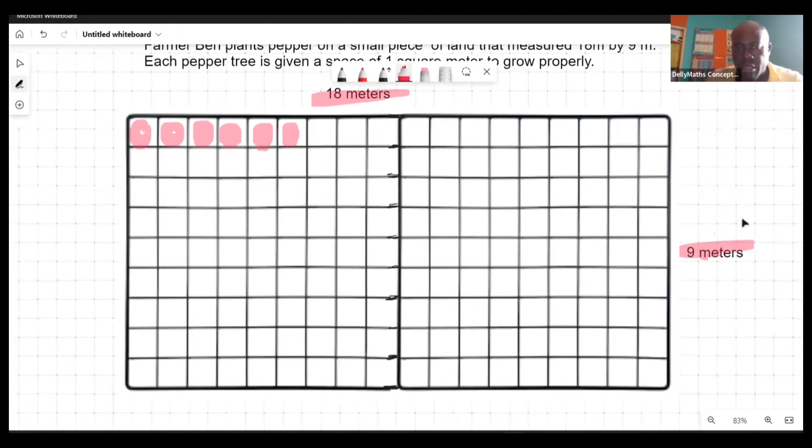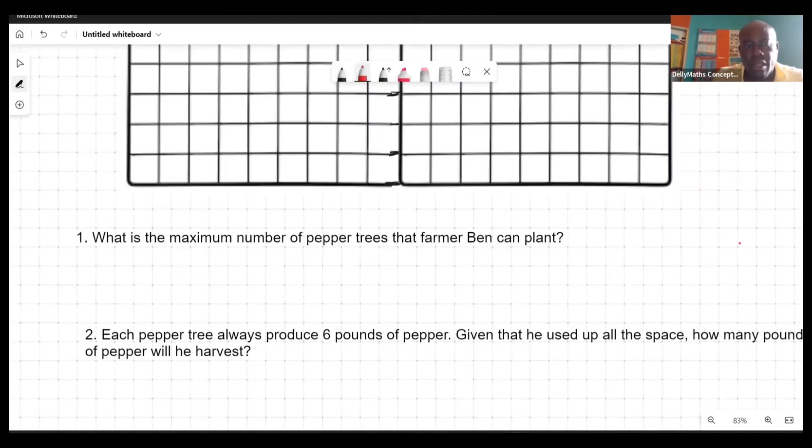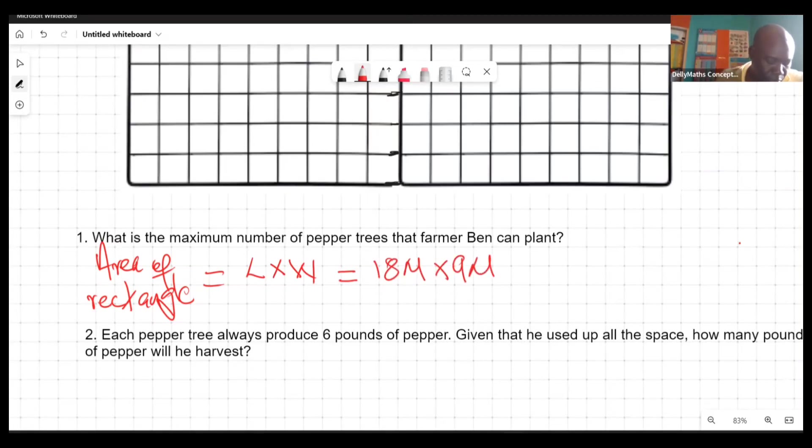This is a rectangular plot of land, so basically we want to find the area of the rectangle. Area of rectangle is always length times width, which is 18 meters times 9 meters. When you multiply 18 by 9 you're gonna get 162 square meters. It simply means that you'll find 162 square meters to be planted on and every tree needs one.